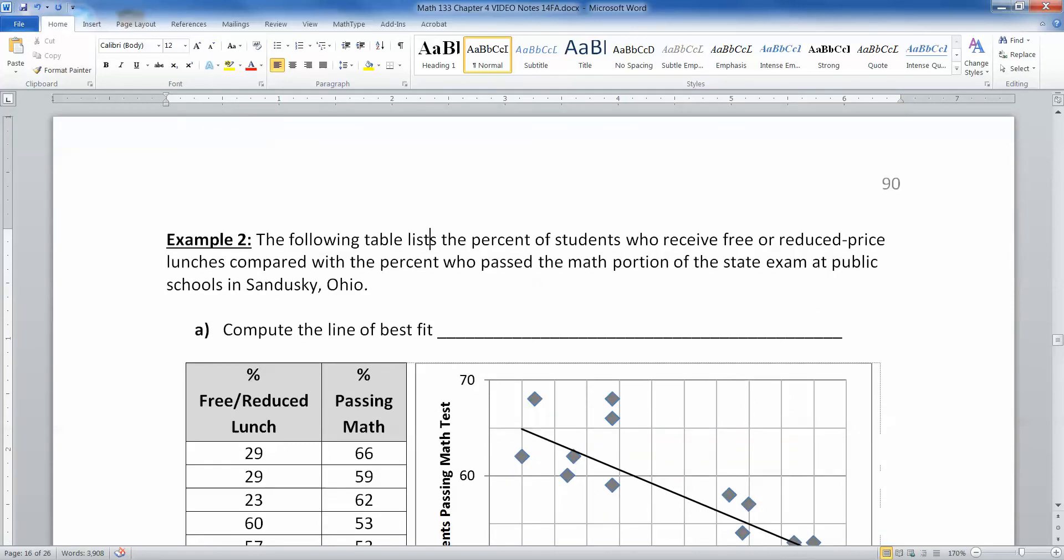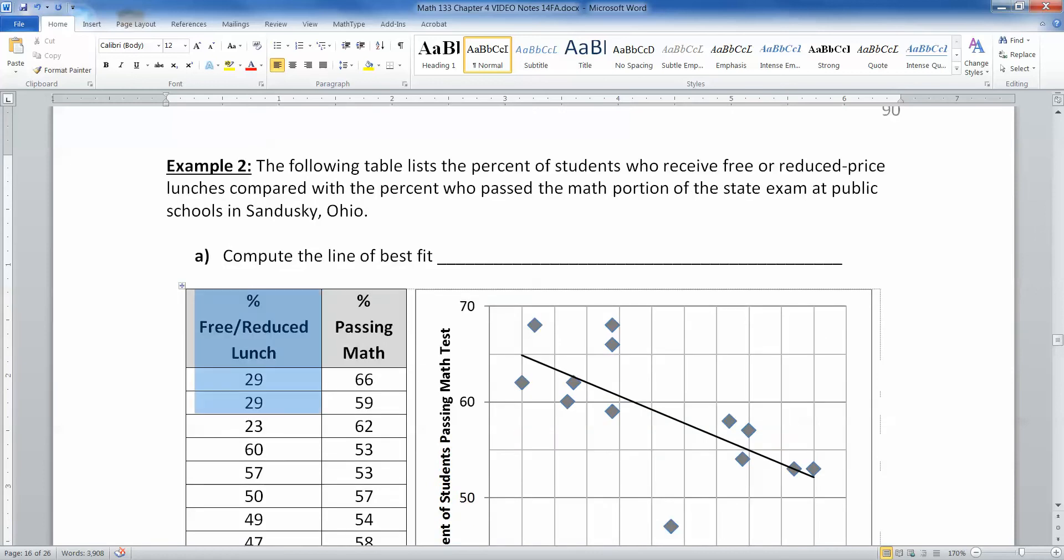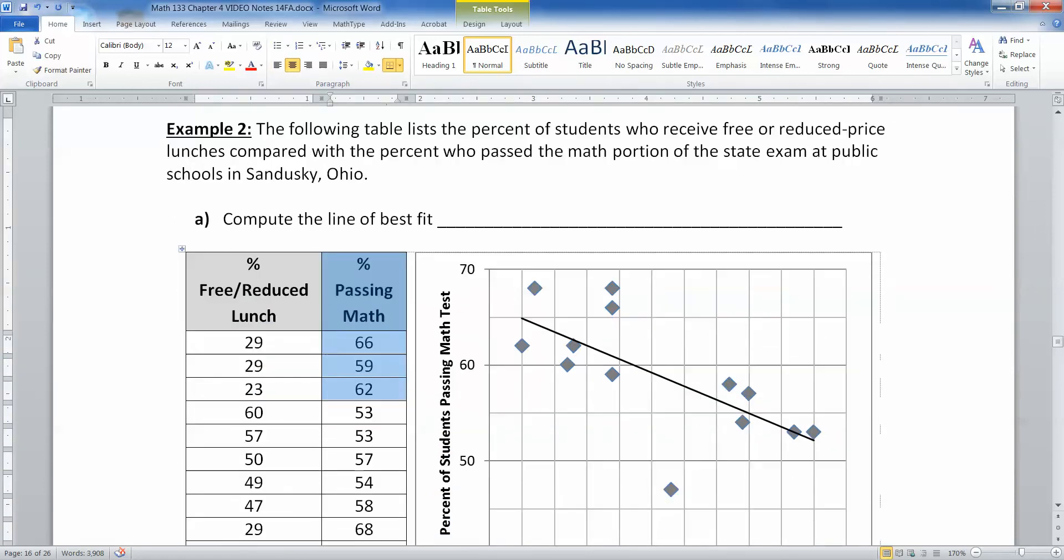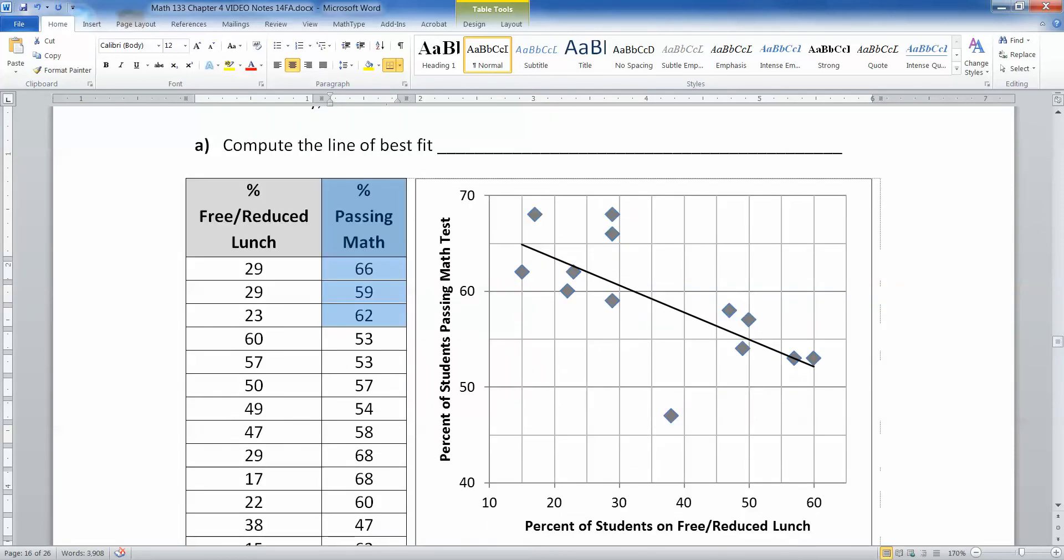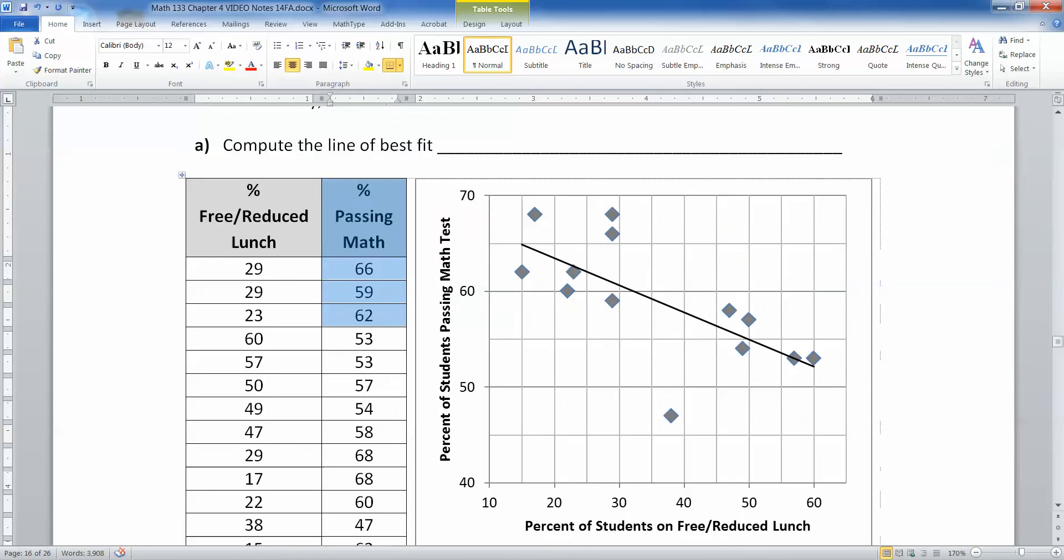We're going to take the table of data below that represents the percent of students who have free reduced lunch and the percent that passed their math tests. Remember this is the same data set we used in 4.1 and I have here for you a graph of this. You can see a picture of it and there's the line of best fit right there. What we want to do is find the equation of that line.